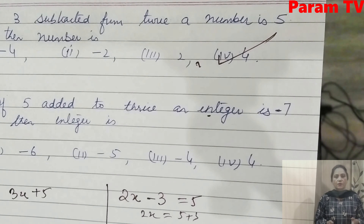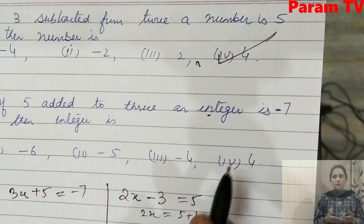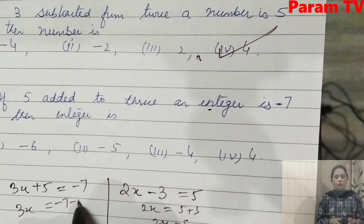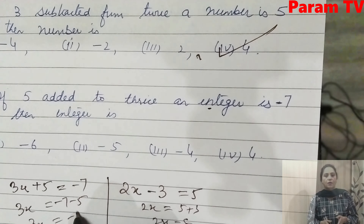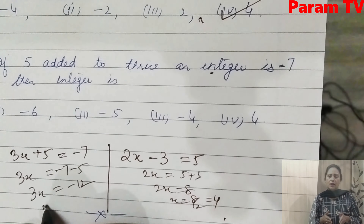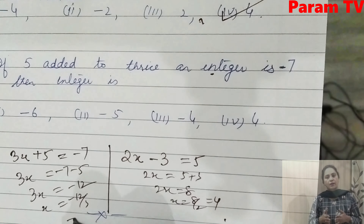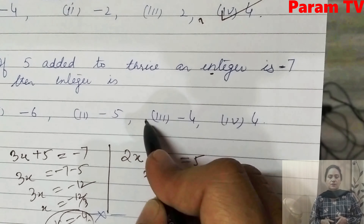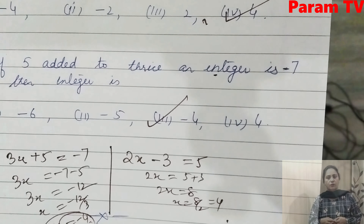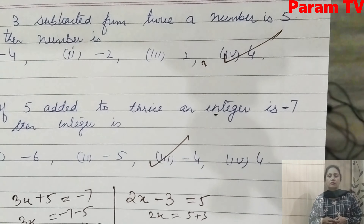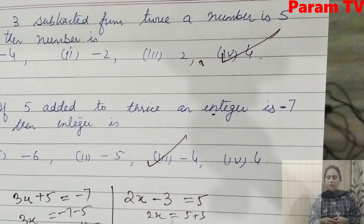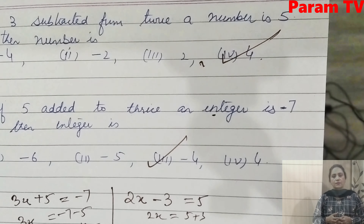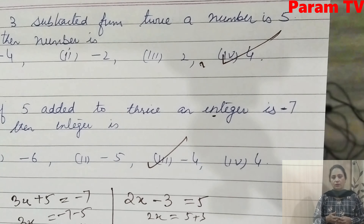Next: if 5 is added to 3 times some integer x, the result is -7. So 3x + 5 = -7, giving 3x = -7 - 5 = -12, and x = -12/3 = -4. So x = -4 is the answer — the third option is correct.